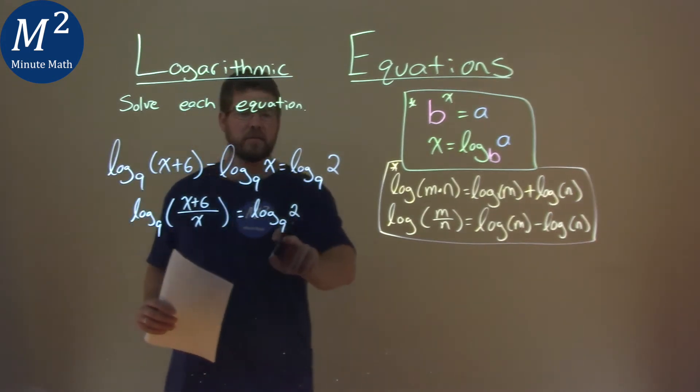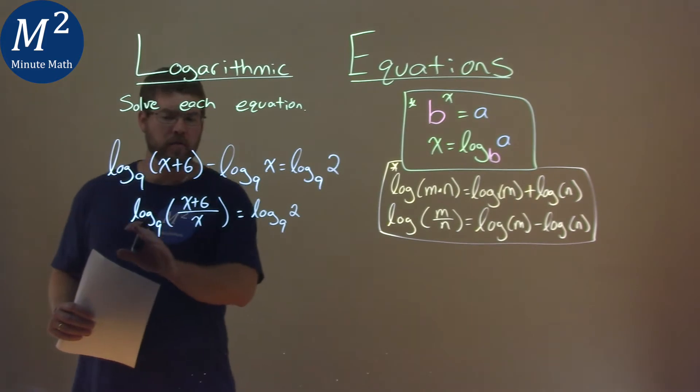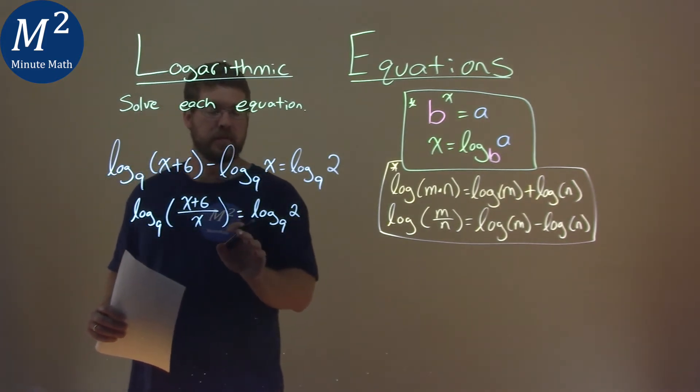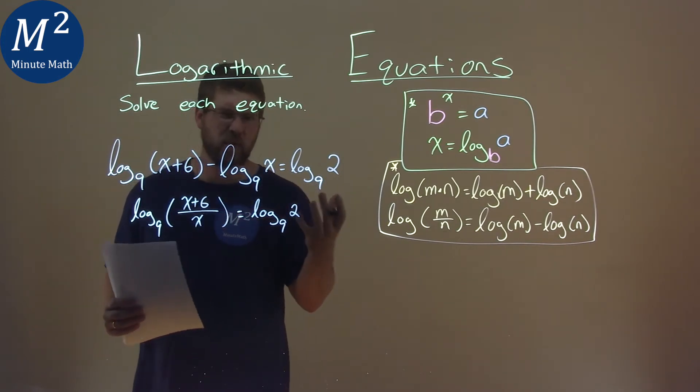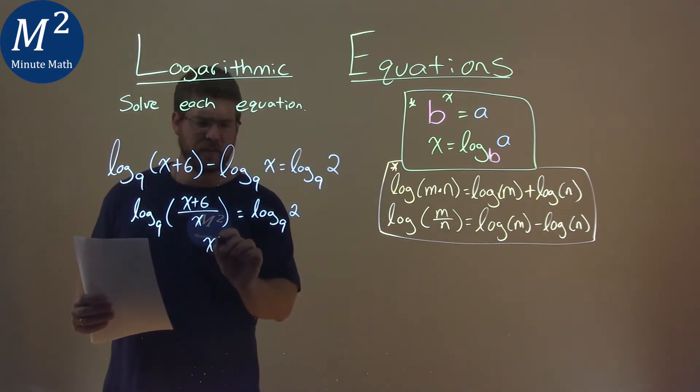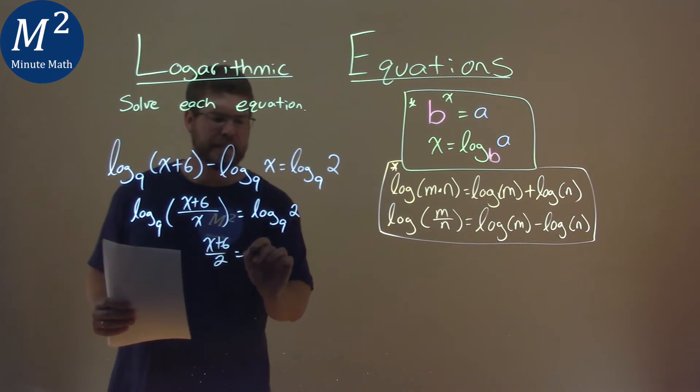Well, we have the same base of 9. So we have log in the same base, and it's equal to each other. We can set what we're taking the log of now just equal to each other and ignore the logs. So we have x plus 6 over 2 is equal to 2.